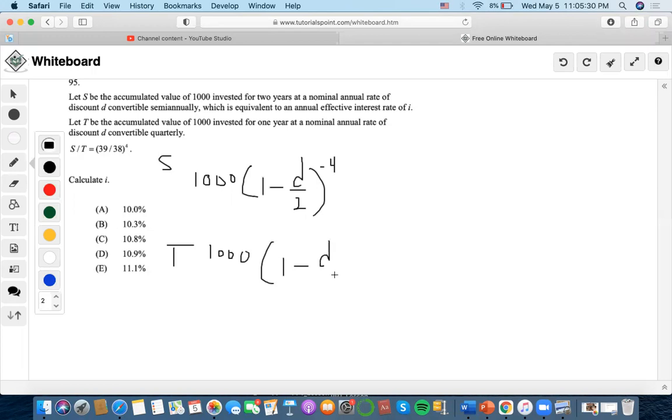T is discounted convertible quarterly for one year, so the exponent is negative four. Now it says S over T is equal to this, which practically means that this fraction is equal to it.